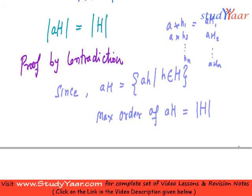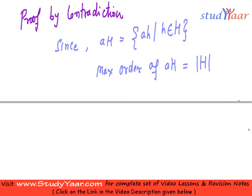So, in that case I will have the maximum order when all the elements of these operations are distinct. And in that case the order would be equal to the order of my subgroup. Now,